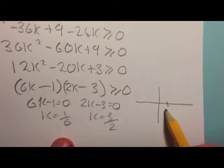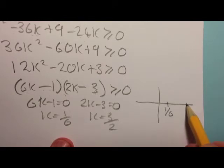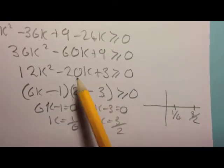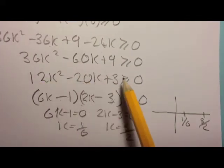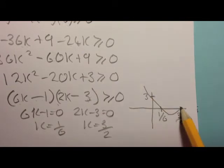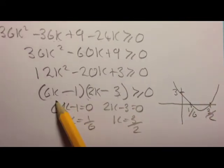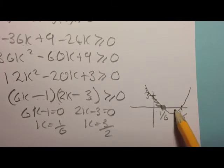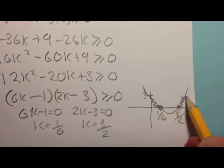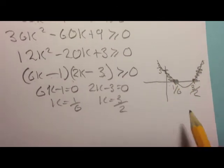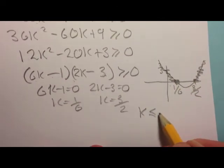If we do a little sketch just to get the actual solutions out, we've got the critical values at 1/6 and 1 and a half, 3 over 2. It's a positive k squared going through plus 3. We want to know when is this greater than or equal to 0. Well, it's greater than or equal to 0 here, including 1/6, and including 3 over 2, and here.